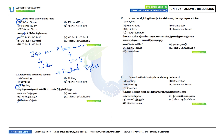Tenth question: Which instrument is used for sighting the object and drawing rays in plane table survey? Sighting the object and drawing rays in a plane table is done with a plain alidade. Option A is the correct answer.